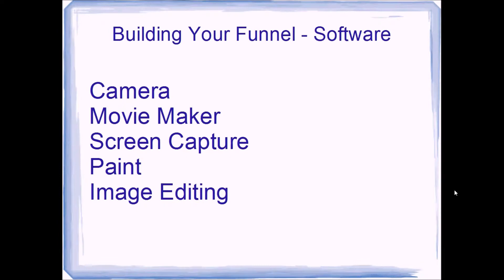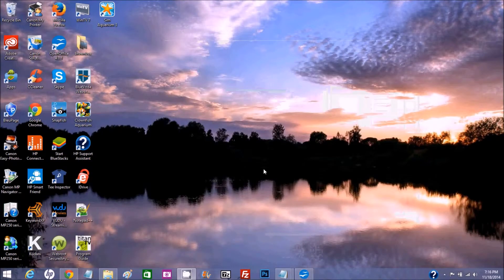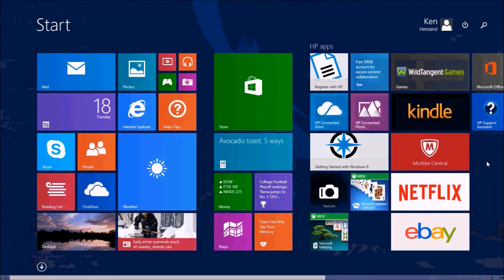I also use Paint, which is on your PC, and you're probably going to want to do some image editing. I have premium software for that, but you can go online and do free image editing — just Google it and there are lots of places that work really well. Now I'm going to go into my computer and show you how to find this stuff and how to set it up. You're going to go into the back of the house and search for some things.